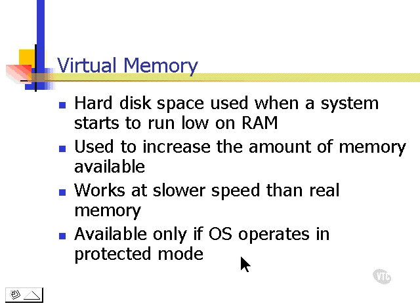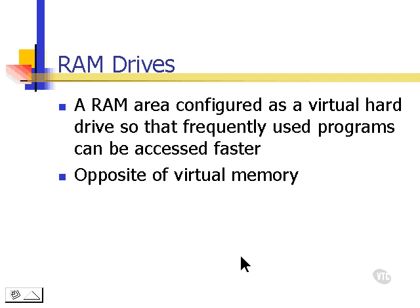The opposite of virtual memory is also possible. This is called a RAM drive. In a RAM drive, a RAM area is configured as a virtual hard drive so that a frequently used program can be accessed faster. For example, a print spooler, instead of using a hard drive — which would be slower — sometimes uses a RAM drive, which is faster. Next, we'll take a look at specific files that are used to manage memory in DOS.